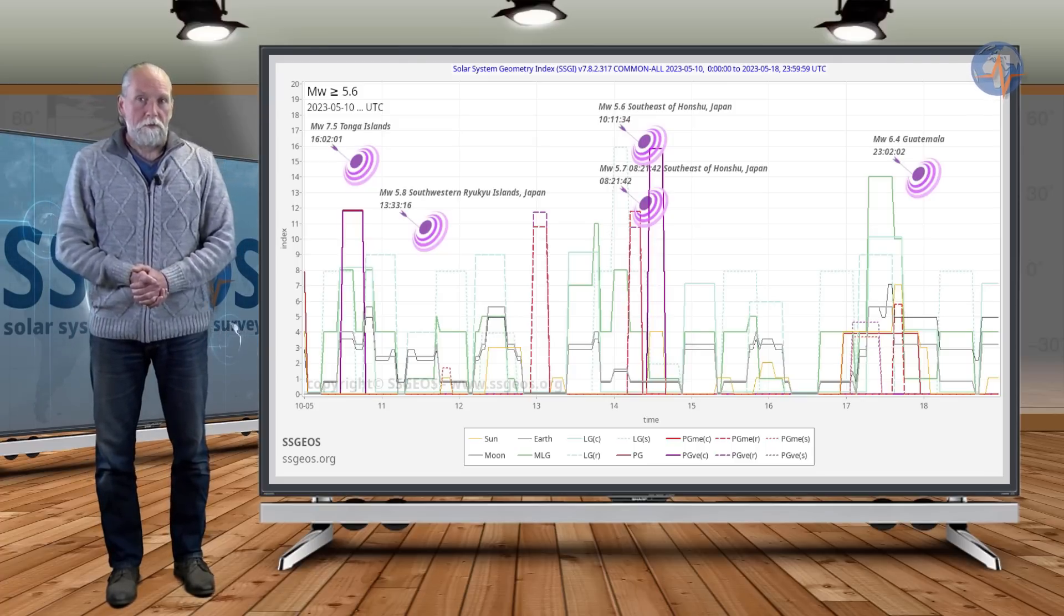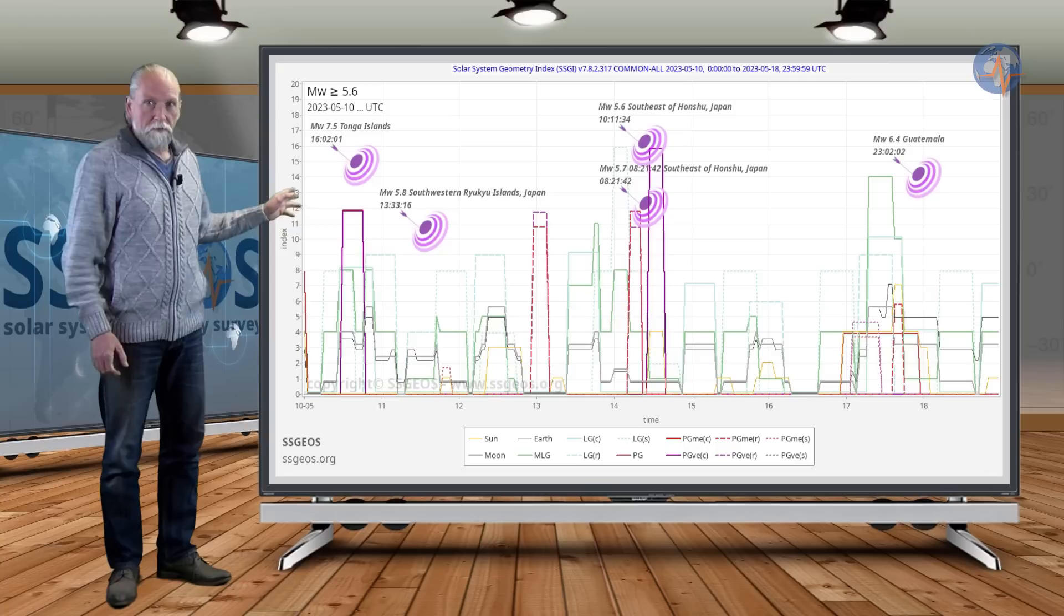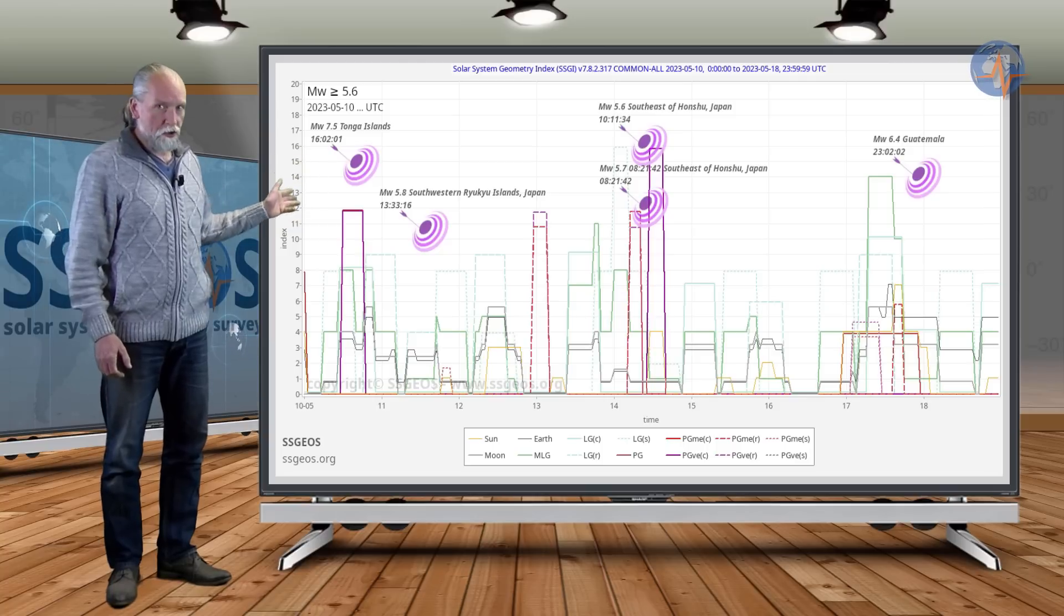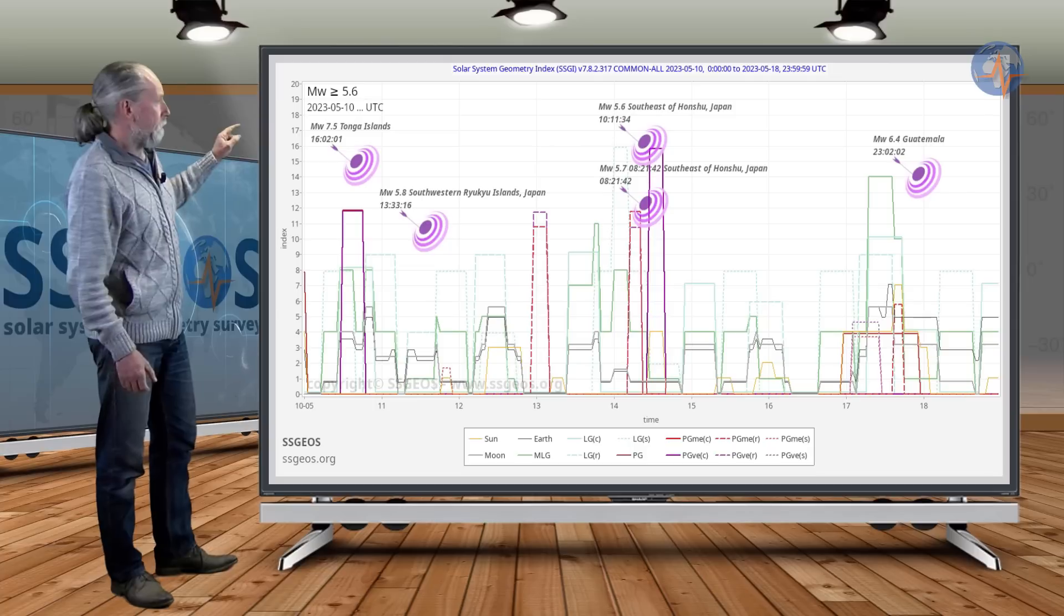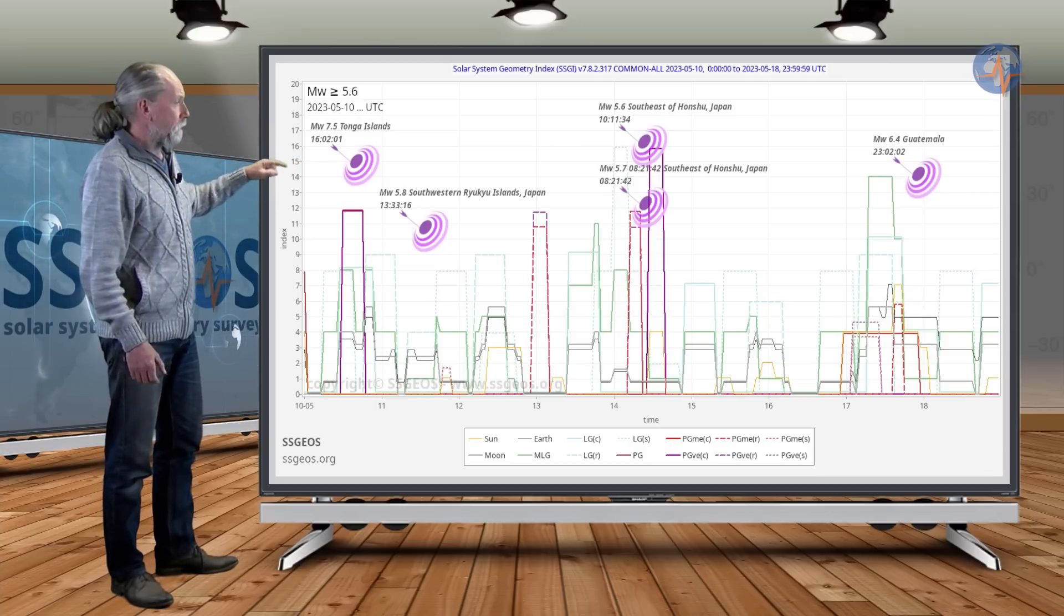If you look at the SSGI graph with earthquakes magnitude 5.6 and larger projected on the graph, we see that a magnitude 7.5 occurred at Tonga on the 10th, pretty much at the time of the planetary peak that we see there in purple.